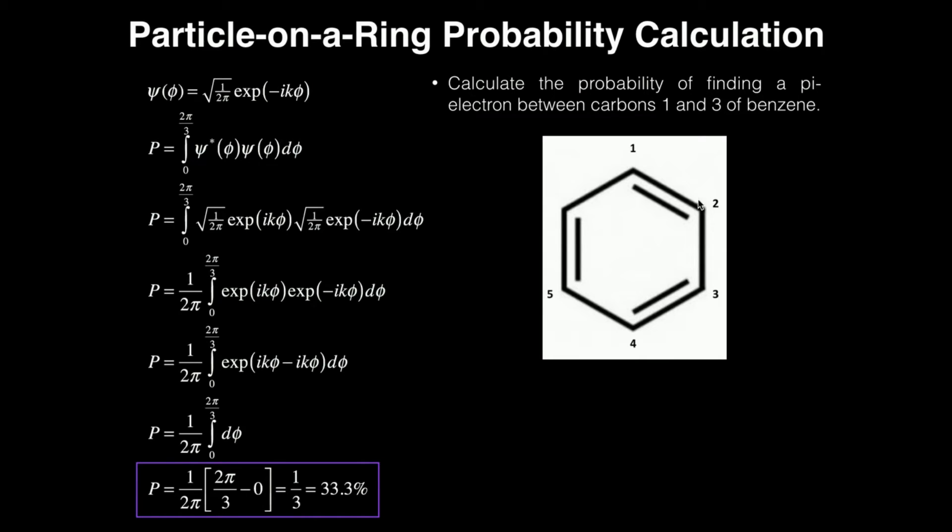If there were a different number of points on here, then you would just take two pi and divide by that, whatever, however number of points there are. So what is my normalized wave function for particle on a ring? So the wave function with respect to phi is the square root of one over two pi times the exponential of negative ik phi.